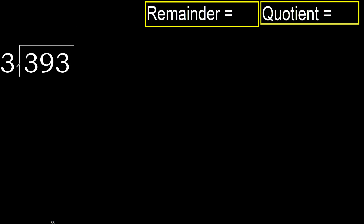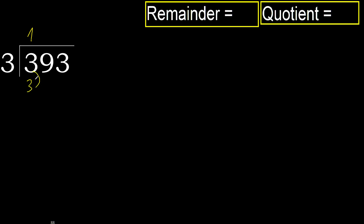393 divided by 3. 3 is not less, therefore work with 3. 3 multiplied by which number is nearest to 3 but not greater? 3 multiplied by 2 is 6 — 6 is greater. Multiply by 1: 3 is not greater. 3 minus 3 equals 0.